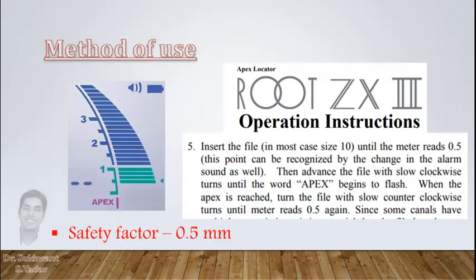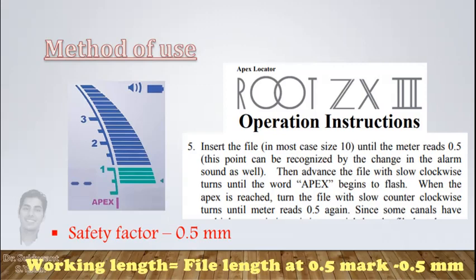So the best way to record working length is to take the file to the apex mark and then slightly rotate back to the 0.5mm mark. Now reduce 0.5mm from this length, which will be your final working length.